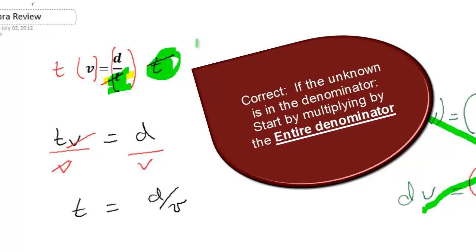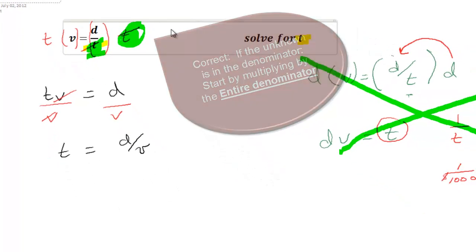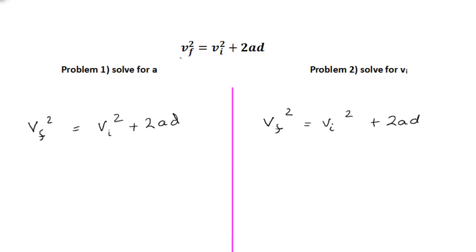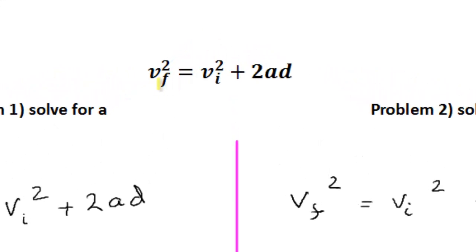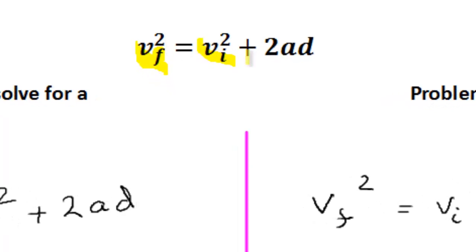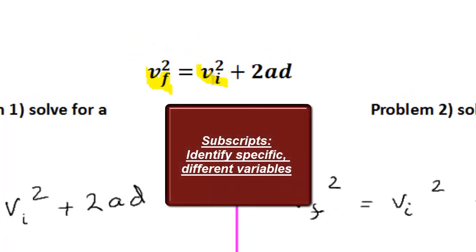If you do that, your life will be much simpler. Our next one is VF squared equals VI squared plus 2AD. First, I want to talk about these subscripts. We have a VF and we have a VI. That makes this VF different than VI. So those subscripts means these are two different Vs or velocities. So you've got to be careful.